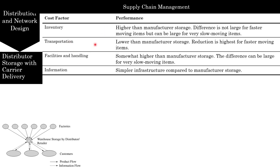Transportation costs are lower than manufacturer storage because economical modes of transportation, such as truckloads, can be employed for inbound shipments to the warehouse which is closer to the customer. Unlike manufacturer storage, under which multiple shipments may need to go out for a single customer order with multiple items, distributor storage allows outbound orders to the customer to be bundled into a single shipment, further reducing transportation costs. Distributed storage provides savings on transportation of faster-moving items relative to manufacturer storage.